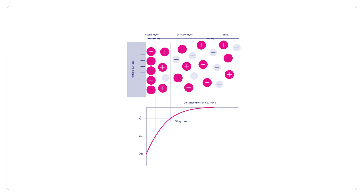The development of a net charge at the particle surface affects the distribution of ions in the surrounding interfacial region, resulting in an increased concentration of counter ions close to the surface. Thus an electrical double layer exists around each particle. The liquid layer surrounding the particle exists as two parts: an inner region called the stern layer where the ions are strongly bound, and an outer diffuse region where they are less firmly attached. Within the diffuse layer there is a notional boundary inside which the ions and particles form a stable entity. When a particle moves, ions within the boundary move with it, but any ions beyond the boundary do not travel with the particle. This boundary is called the surface of hydrodynamic shear, or slip plane.